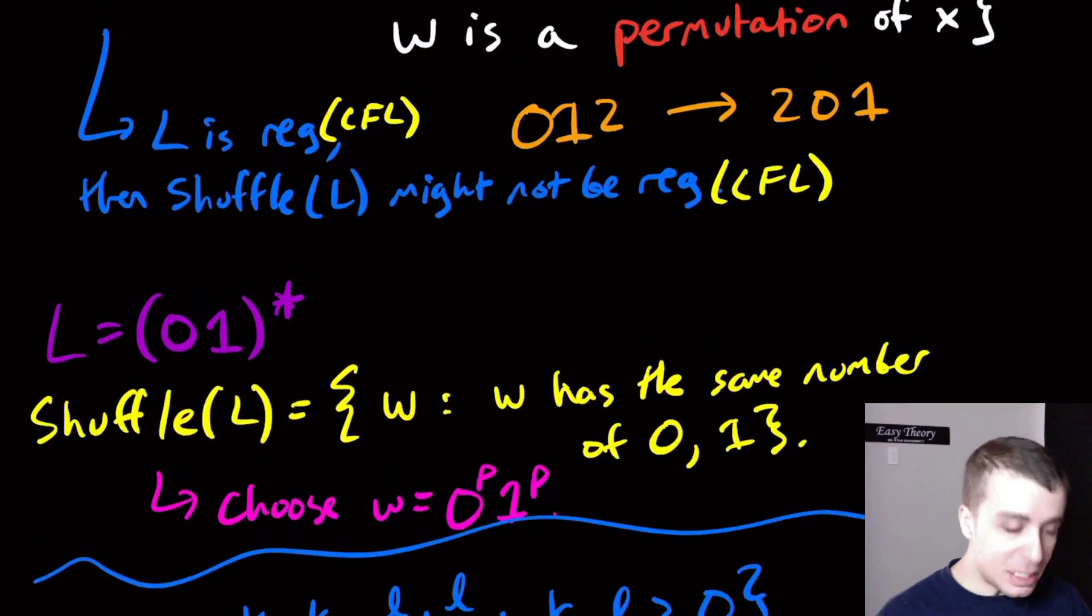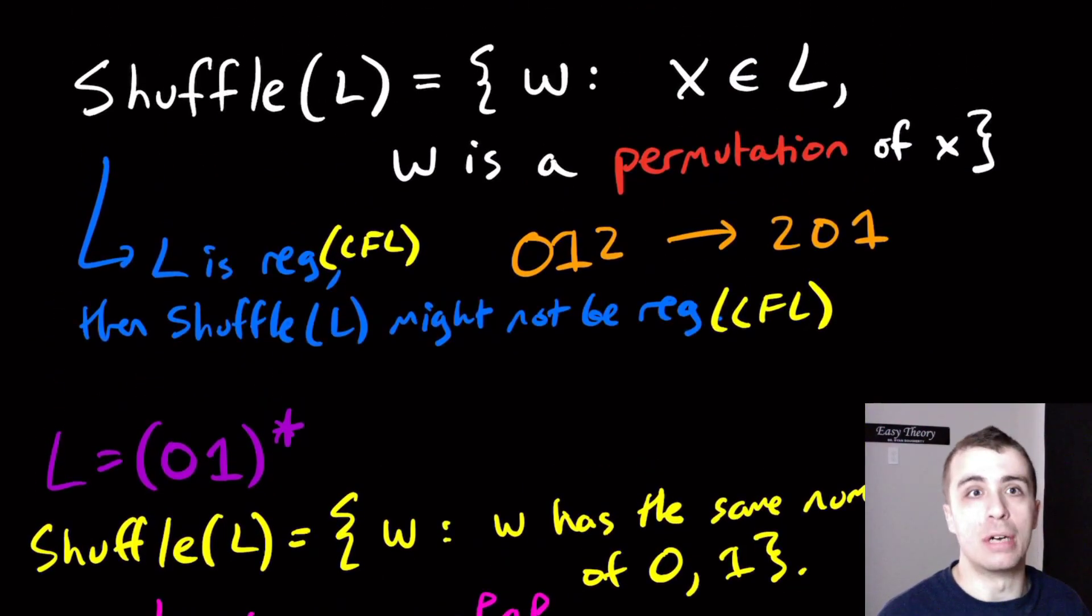Under this particular definition of shuffle, regular languages are not closed under it or the context-free languages. Under different definitions of shuffle, maybe, but in this particular definition they are not closed. Hopefully that was interesting. Leave comments about this definition of shuffle in the comments down below or permutations.